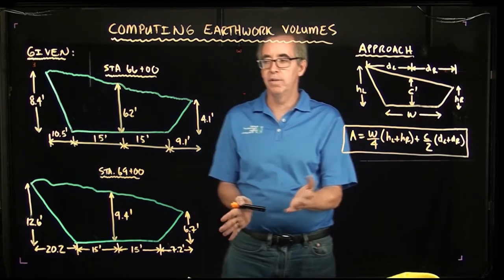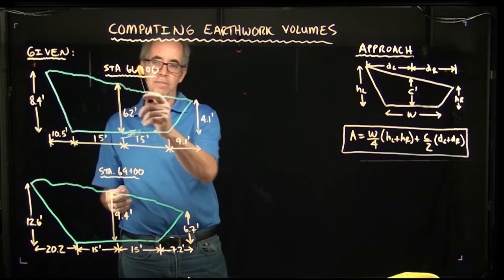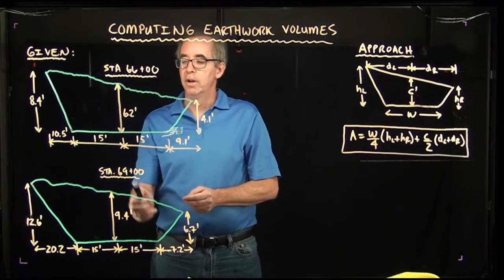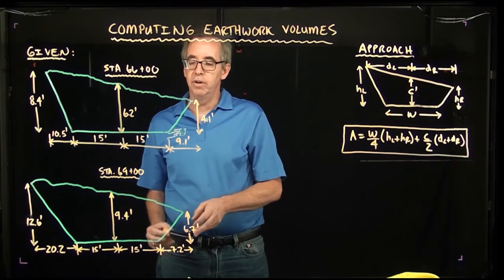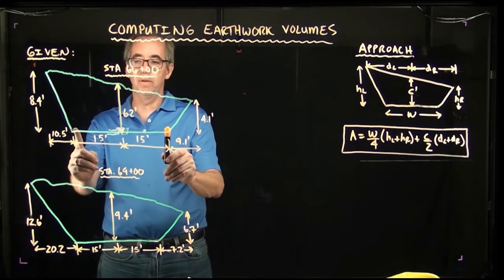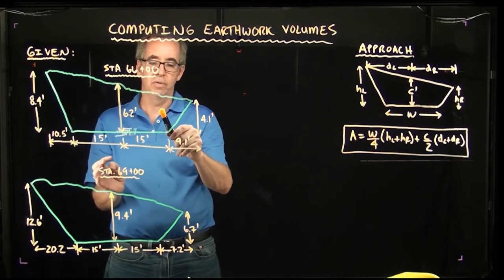Like in this particular case, we have two cross sections. One cross section is station 66 plus 00 and another cross section 300 feet down at 69 plus 00. And you can see from each cross section we have, for example, a roadway that's going to be 30 feet wide with these slopes and we have to cut this amount of soil.